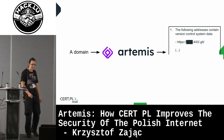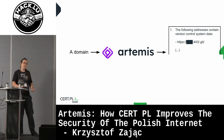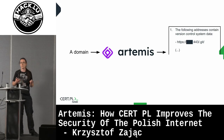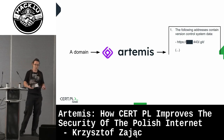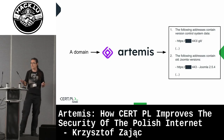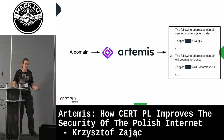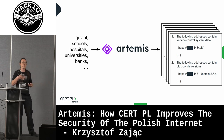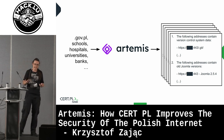We built a system which takes a domain, runs some scanning, and produces a report. Because we don't want to produce these reports manually — it's too hard — we decided to build a system which will produce a text message ready to be sent to that kind of entity. Because our constituency is very big and consists of a lot of entity types, we don't put single domains into the system. We put all Polish government domains, all local government domains, all schools, all hospitals, and receive a package of reports from the system.